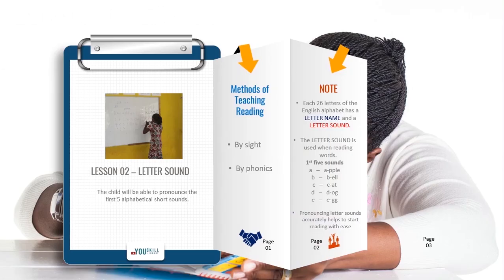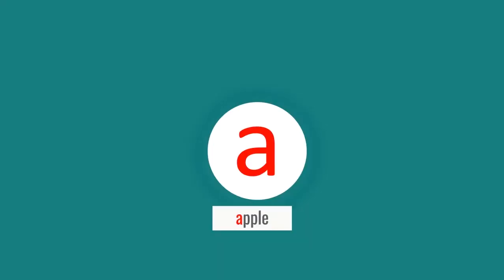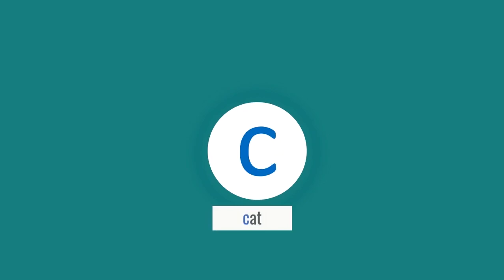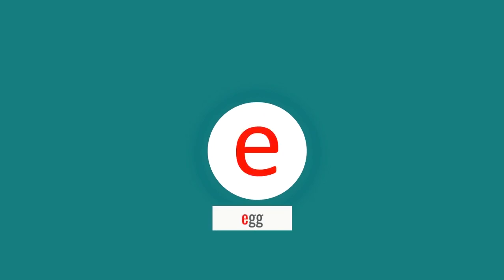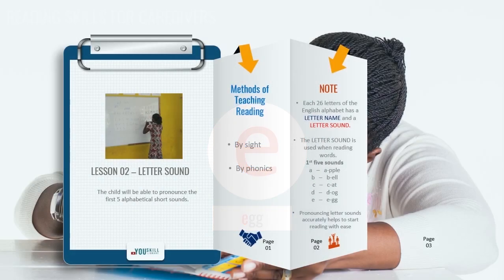These are the first five sounds of the English alphabet. Pronouncing letter sounds accurately helps to start reading with ease.